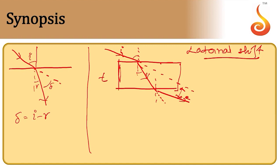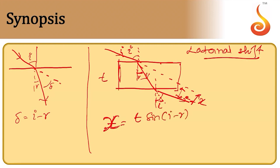Let t be the thickness, i the angle of incidence, and r the angle of refraction at the first surface. The lateral shift x is given by x = t sin(i - r) / cos r, where t is the thickness of the slab. Remember, the emergent ray is parallel to the incident ray only if the medium on both sides has the same refractive index.